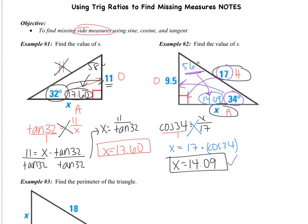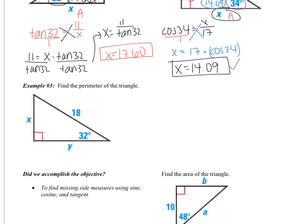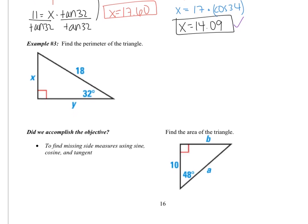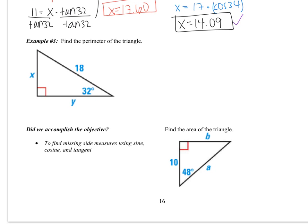Let's move on to our last example together before you guys have your objective example. It says, find the perimeter of the triangle. Now remember that perimeter means that you add up all the sides. So let's write that. Perimeter means you add up the sides. So you're going to have to find both x and y. Right now, I just want you to find x. So pause the video and find x. Come back when you are finished, please.